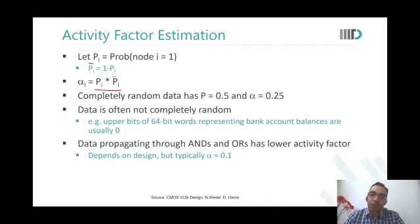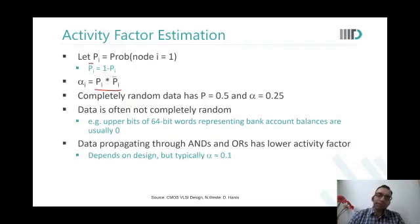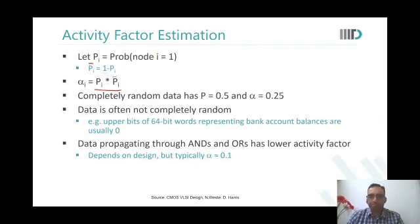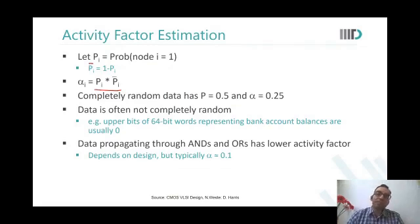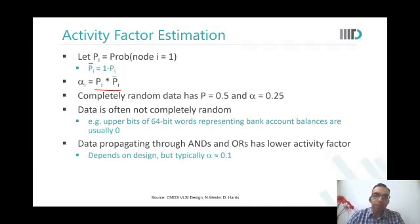However, data is not completely random at all times. For example, if you're talking about bank accounts, the MSBs will largely be zeros. Also, because data propagates through AND gates and OR gates which have lower activity factor, a typical design would have an activity factor of about 0.1.